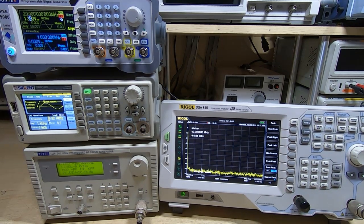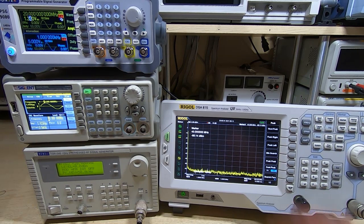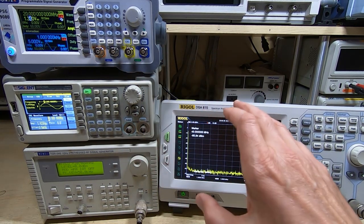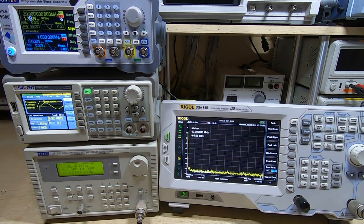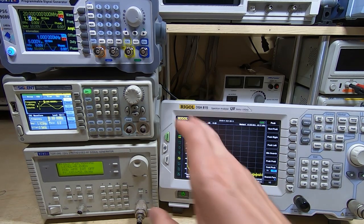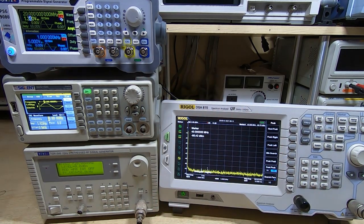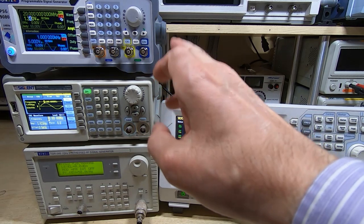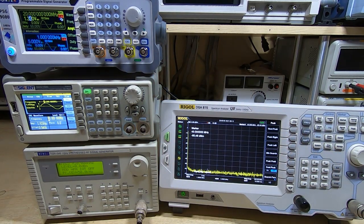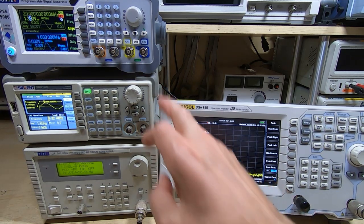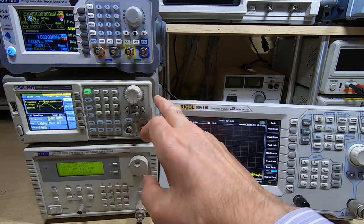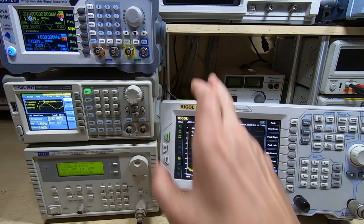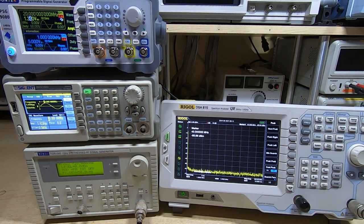Before I continue, apologies for all the fan noise. I do have quite a few pieces of equipment running and they've all got fans running making a bit of a racket, but I needed to leave these all running for a few hours before I did this demonstration. This is in response to a comment and question that was posted on the PSG 9080 video, and that was in relation to the harmonics of the signal output. Of course this only applies to the sine wave output of the generators. The other signals this doesn't apply to.